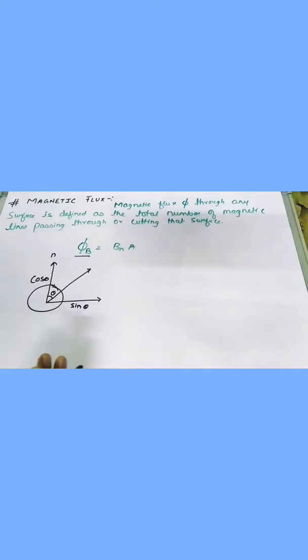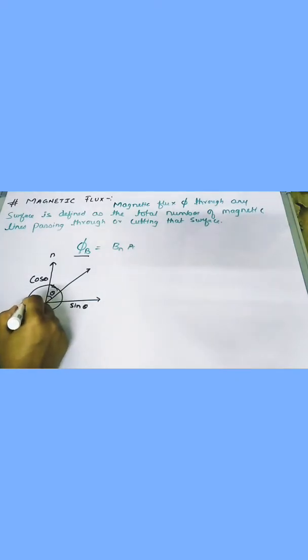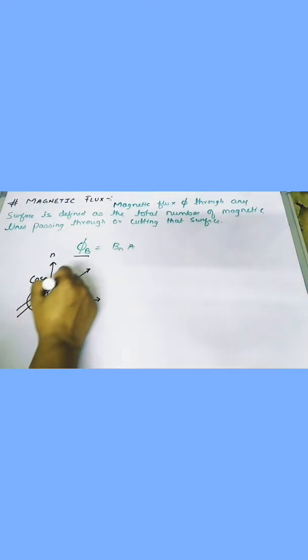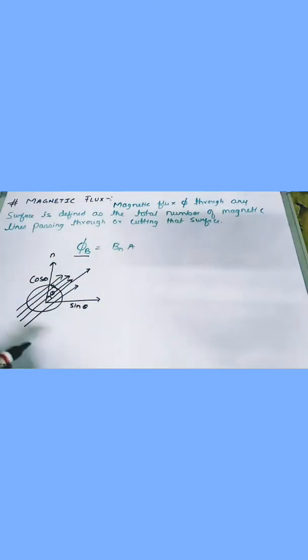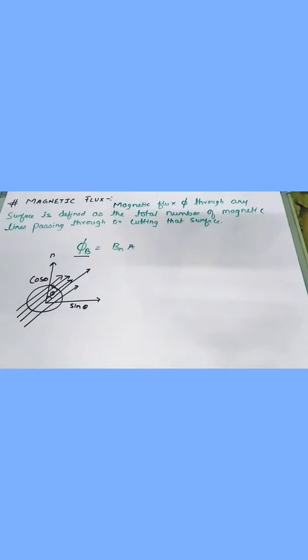If the magnetic flux is not changing, there will be no electromagnetic induction. The number of field lines passing through this — this number of field lines which will encounter, because of the field lines passing through it, that gives its magnetic flux. So what is magnetic flux in general? A surface is defined as the total number of magnetic field lines passing or cutting through that surface, and that gives its magnetic flux.